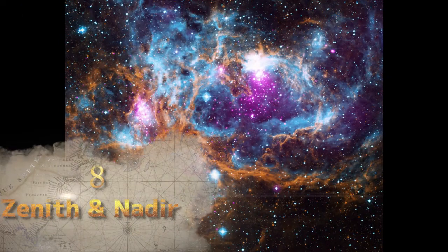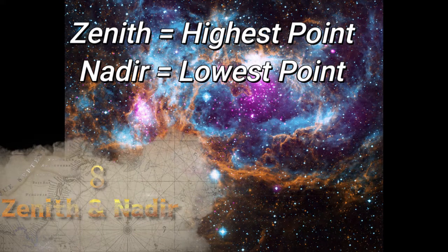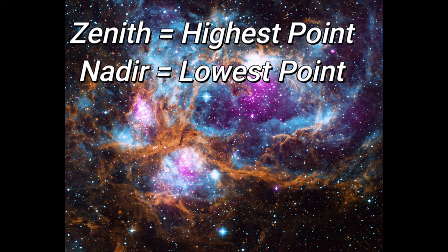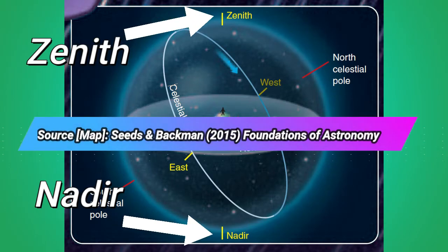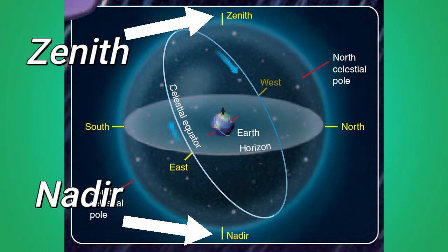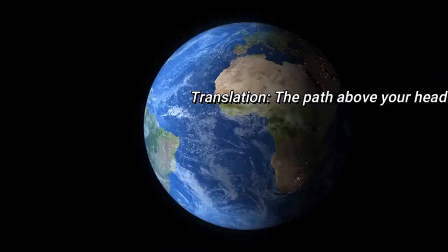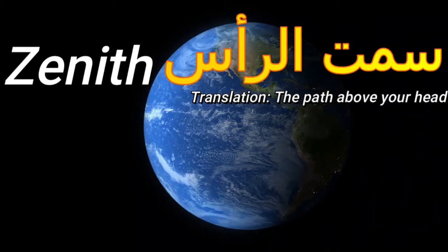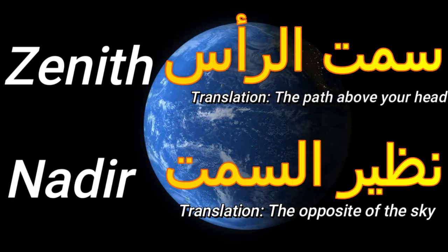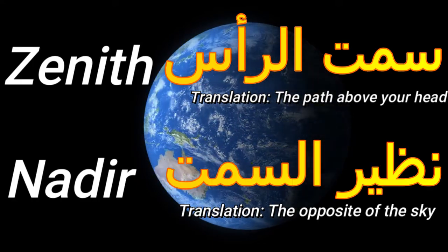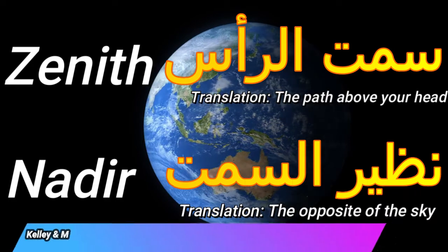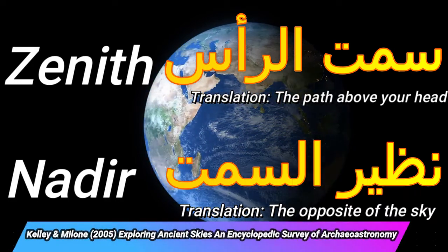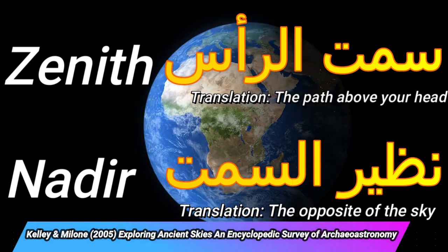On to more astronomical terms: zenith and nadir. The zenith is the highest point and the nadir is the lowest. Here is an example of both terms used in the diagram of the Earth's celestial sphere. Zenith comes from the Arabic term Samat al-Raas, and nadir comes from the Arabic Nazir al-Samat. According to Kelly and Milon, like a lot of these Arabic terms, they passed on to Europe through Islamic Spain.